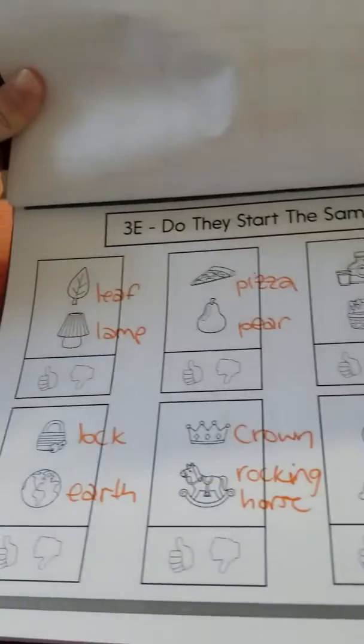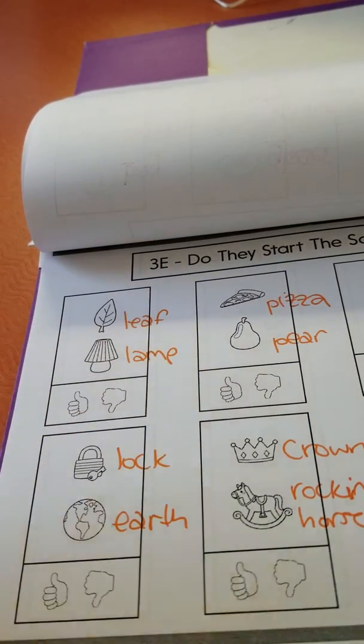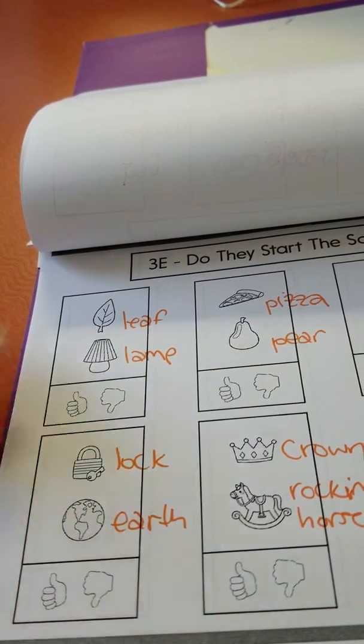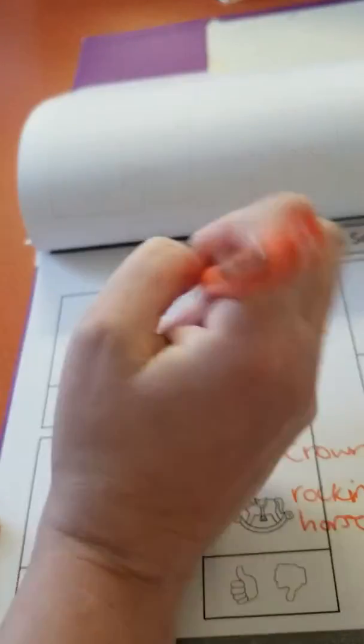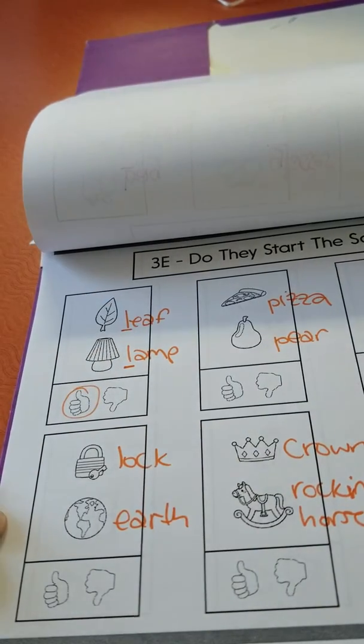All right, so remember we're trying to sound the first sound, first letter. Does it sound the same? So we have leaf, l-l-leaf, and lamp, l-lamp. Does that sound the same? Yes, so we're circling this.